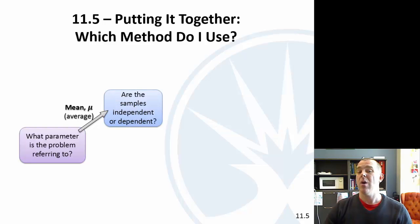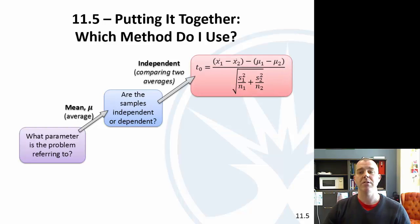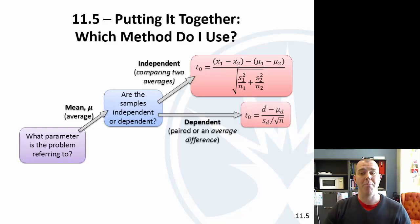So if it's a mean though, the question is, are the samples independent or dependent? So if they're independent, you're comparing two averages, then you would use that t-statistic difference in the means. If they're dependent, they're paired, you're going to do the mean difference.